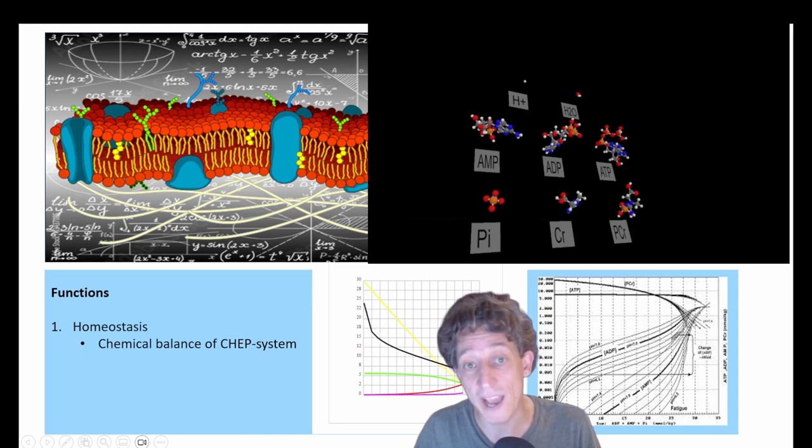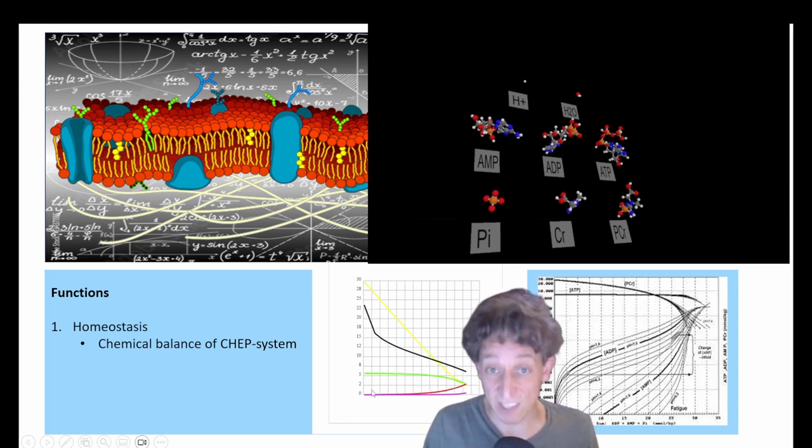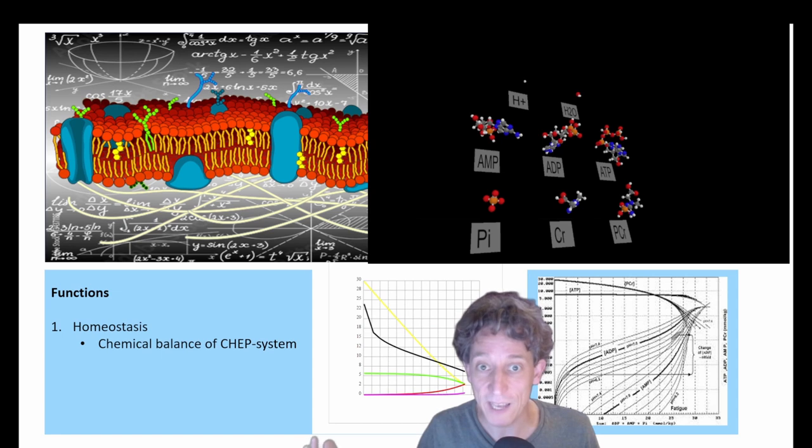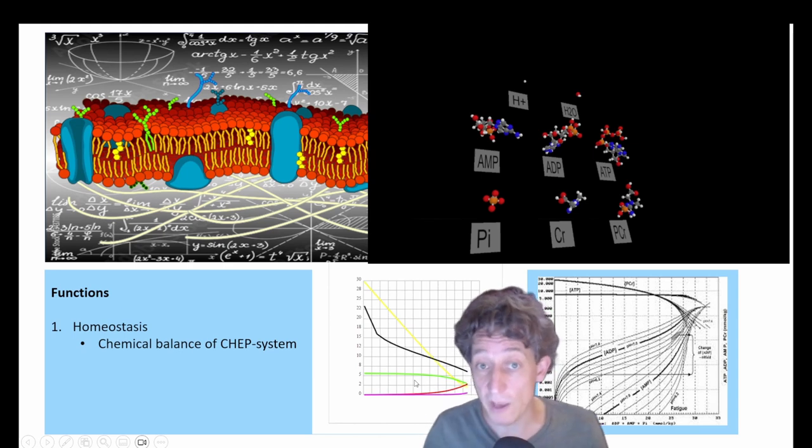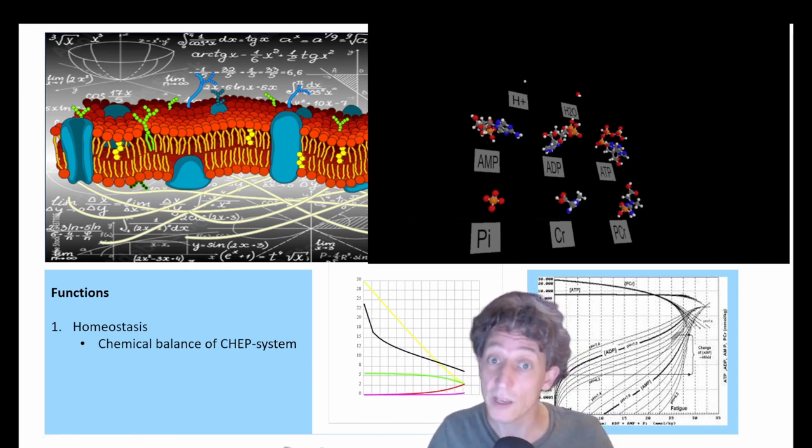Because the more to the right, the less energy is available in the muscle. But the main energy source is ATP and that needs to be kept as high as possible. As soon as there is no ATP left in a muscle cell, it will die.